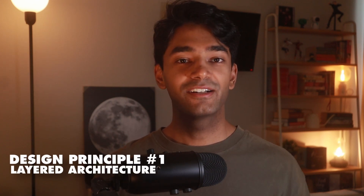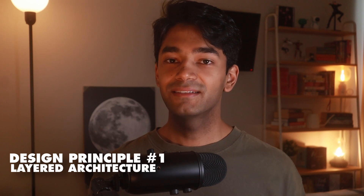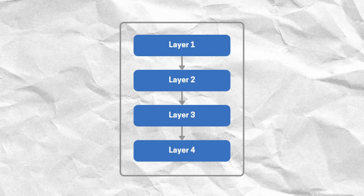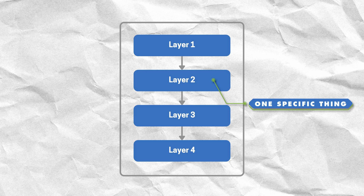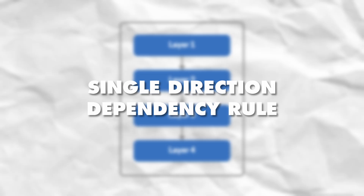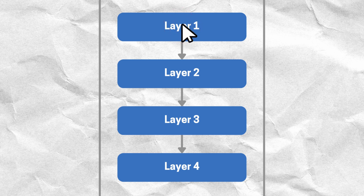The first design principle I'm using is called the layered architecture. As the name suggests, this means splitting my backend code into multiple layers, where each layer is responsible for doing one specific thing and one specific thing only. What makes this really powerful is that I'm following what's called a single direction dependency rule, which means that each layer should only know about the layer that's directly below it and nothing else. So let me break that down with a real example from my video processing application.